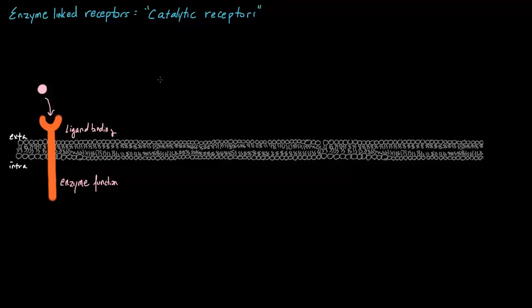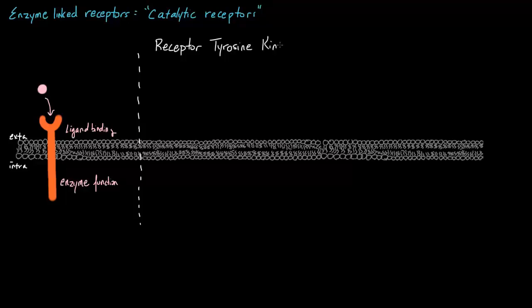Though there are many different types of enzyme-linked receptors, the most widely recognized and most common are called receptor tyrosine kinases. They're particularly important because they regulate cell growth, differentiation, and survival. They can bind and respond to ligands such as growth factors. These are also called RTKs for short.